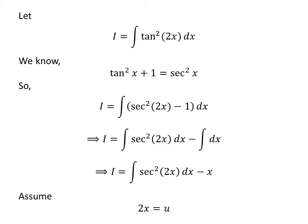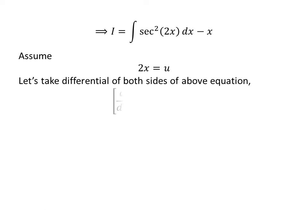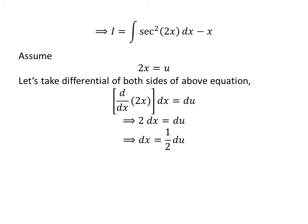To simplify the integral of square of secant of 2 times x with respect to x, let us apply the substitution method. Assume 2 times x is equal to u. Taking the differential of both sides, the derivative of 2 times x with respect to x is equal to 2, so 2 times differential of x is equal to differential of u. Shifting 2 to the right gives us differential of x is equal to half times differential of u.